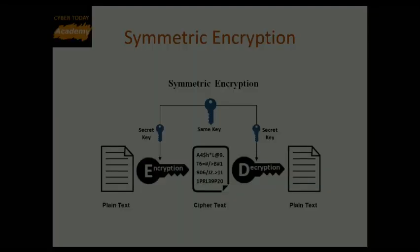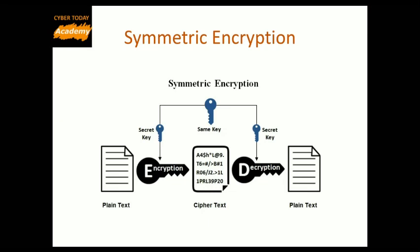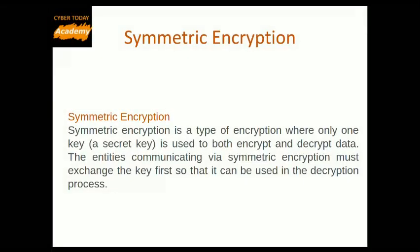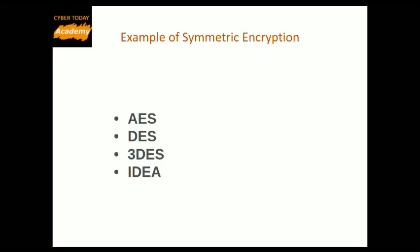Let's start with the first type: symmetric encryption. Symmetric encryption is a type of encryption where only one key, called a secret key, is used to both encrypt and decrypt data. The entities communicating via symmetric encryption must exchange the key first so that it can be used in the decryption process. Examples of symmetric encryption protocols include AES, DES, 3DES, and IDEA.